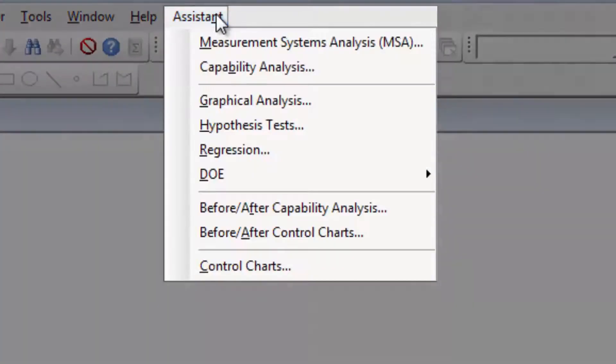The Assistant in Minitab Statistical Software is an interactive menu that guides you through an analysis from start to finish. Let's use it to see if the data confirm or refute Joel's belief.